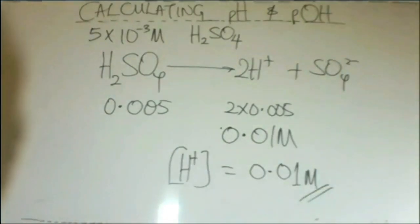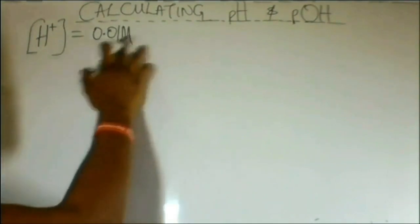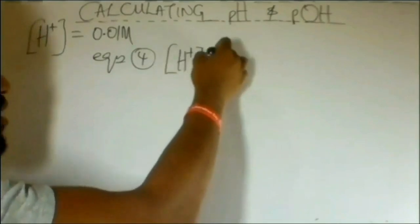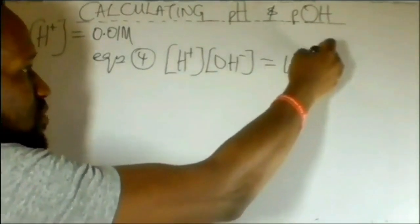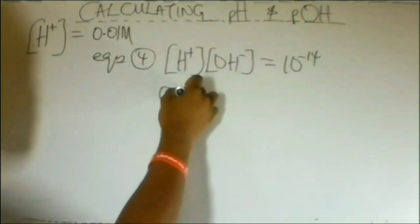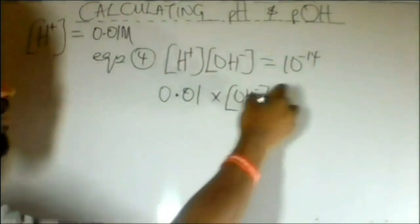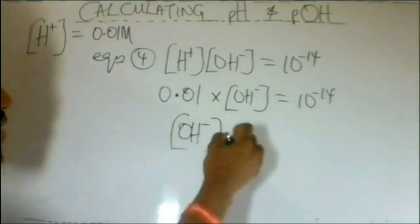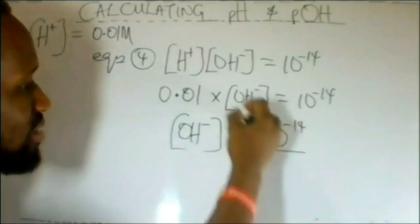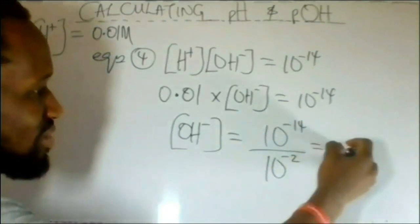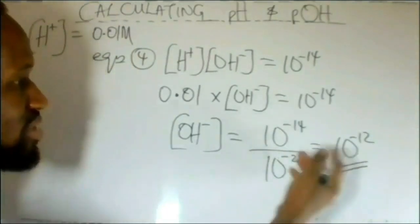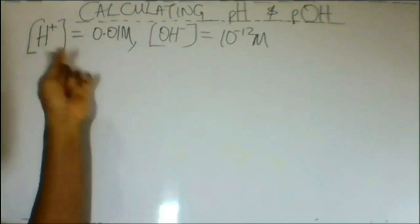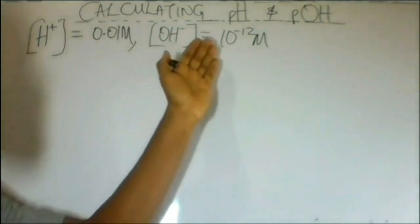This answers the first part of the question. Now let's calculate OH⁻. Our H⁺ is 0.01. From equation 4, we know that H⁺ multiplied by OH⁻ equals 10 to the power of minus 14. So 0.01 multiplied by OH⁻ equals 10⁻¹⁴. Therefore, OH⁻ equals 10⁻¹⁴ divided by 10⁻², giving an answer of 10 to the power of minus 12 molar. So we've deduced hydrogen ion concentration as 0.01 molar and hydroxide ion concentration as 10⁻¹² molar.